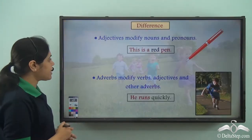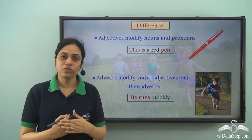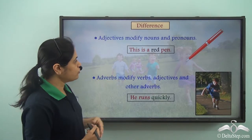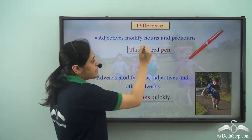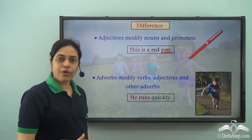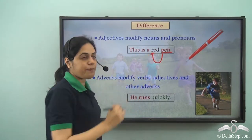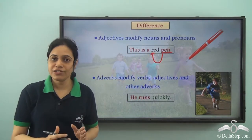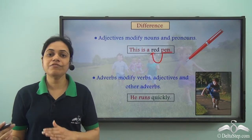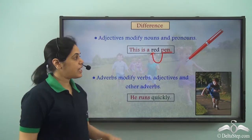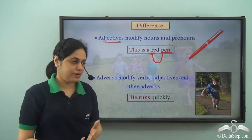Let us see an example. Adjectives modify a noun or a pronoun. Take the sentence: 'This is a red pen.' Here, pen is a noun and the word red is describing the color of the pen. So red is describing the noun pen — hence red is an adjective.